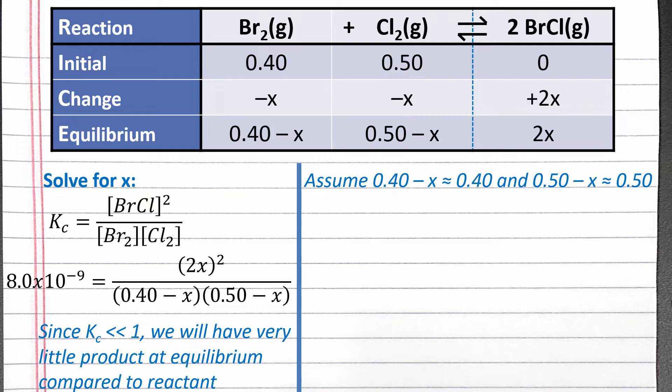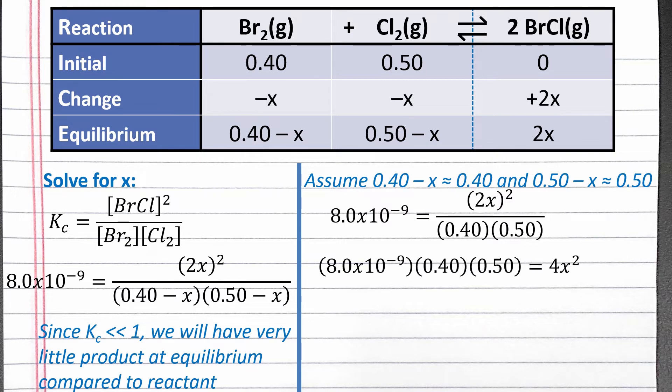These are our two simplifying assumptions. If we plug these simplifying assumptions into our expression, we will be able to solve for x without using the quadratic formula. First, we can square 2x on the right, which is in parentheses, to get 4x squared, and then multiply both sides of the equation by 0.4 and 0.5. Next we can divide both sides of the equation by 4, and then take the square root of both sides, which is the same as raising both sides to the power of 1 half.